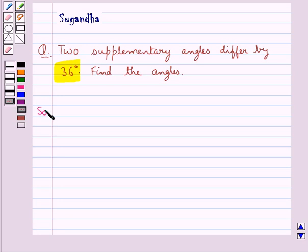Let's move on to the solution. We let angle I equal x degrees. Since we are given that the two angles are supplementary...